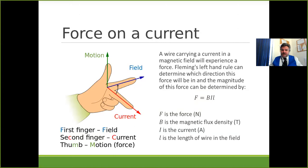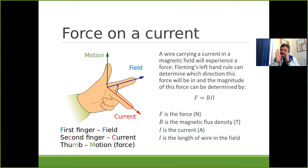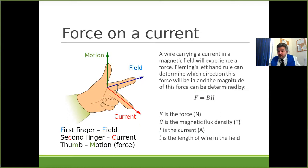Magnetic flux density is the strength of a field - it's the number of field lines per unit area. The more field lines within a given area, the denser and closer together those field lines are, and therefore the stronger the magnetic field. You'll learn more about this shortly.